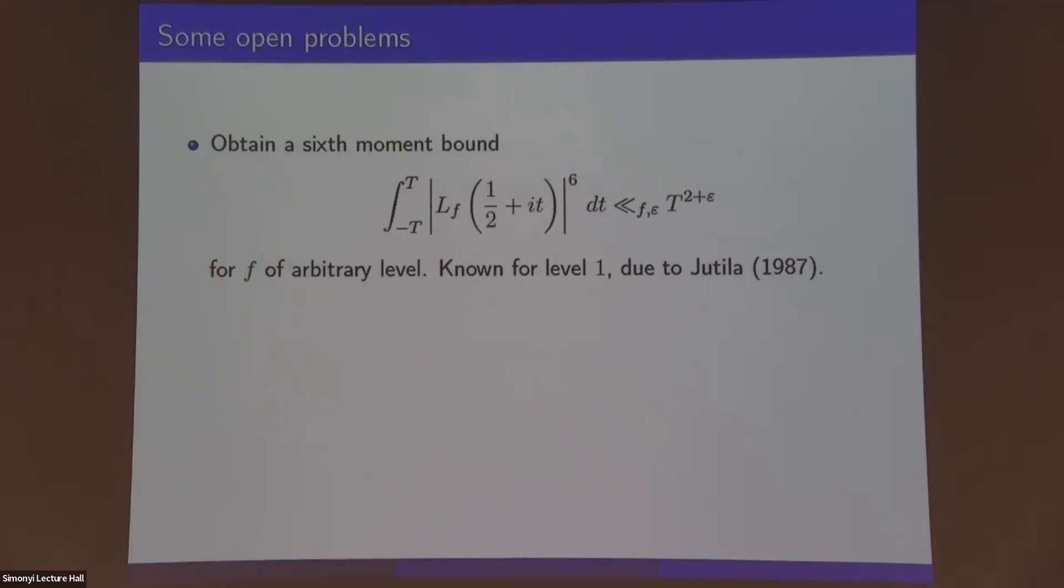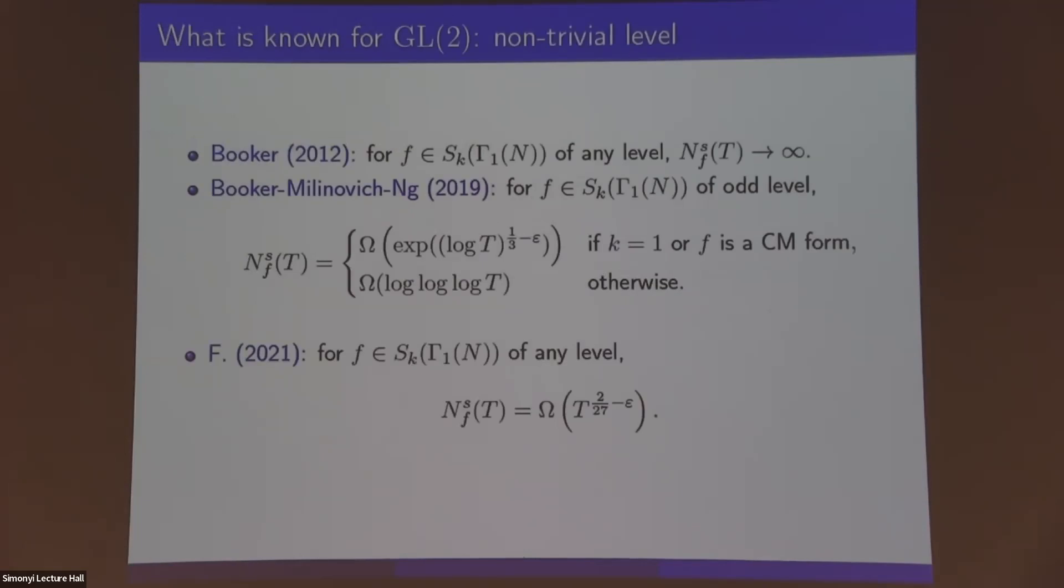I want to mention some open problems. I should also mention that the techniques behind all of these results, so the method originates with Conrey-Ghosh and the new ideas used by Booker have applications also to other interesting problems. For instance, Booker applies it to generalizations of the Chowla theorems, if you know what those are, and to the Artin conjecture as well. So a similar circle of ideas is applied there.